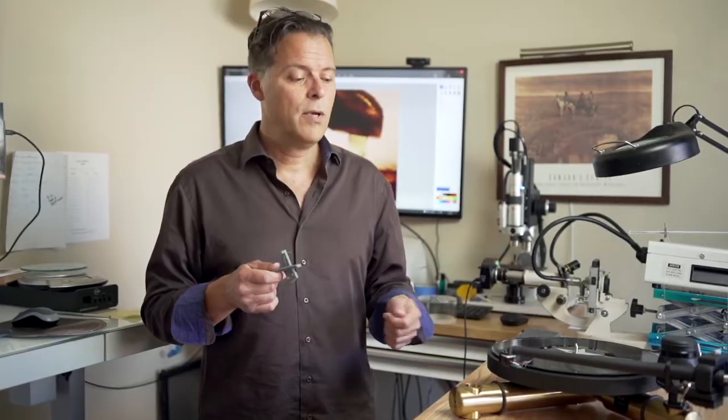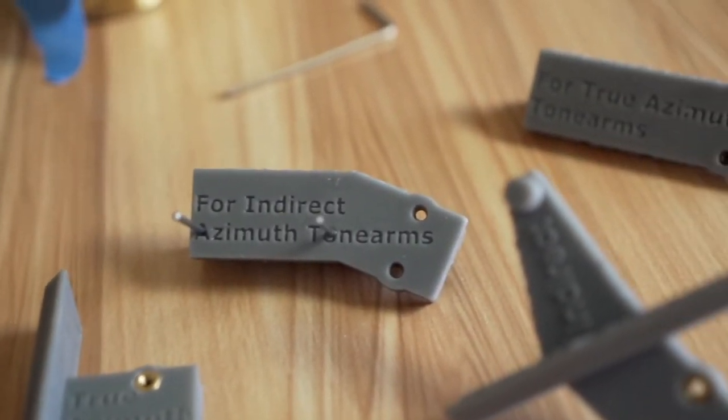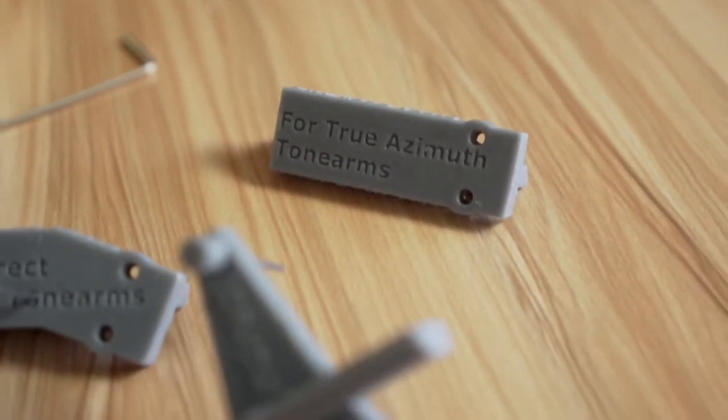So if for whatever reason you don't want to use the custom design shim to achieve your ideal rake and azimuth angles, that's okay. You can use the single bladed Wally reference blades to achieve those angles.